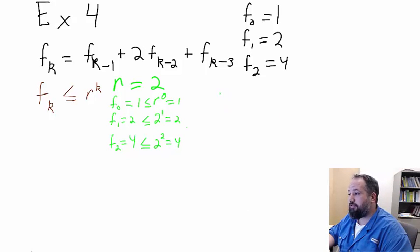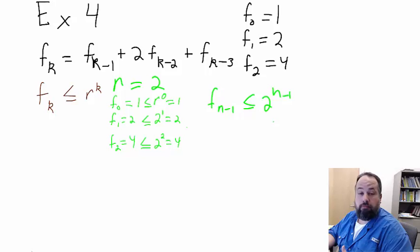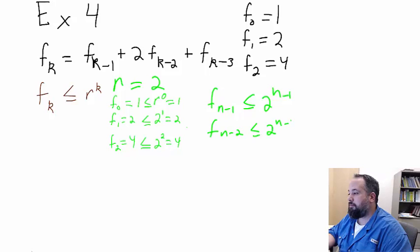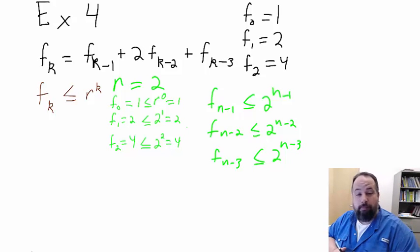Now, our inductive hypothesis is going to be that f of n minus 1 is less than 2 to the n minus 1. And, also, f of n minus 2 is going to be less than 2 to the n minus 2. And f of n minus 3 is going to be less than or equal to 2 to the n minus 3. That's a given. That's our inductive hypothesis. We are assuming that to be true.